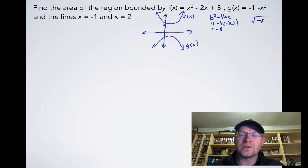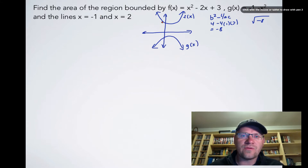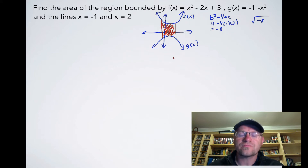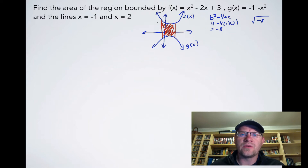For g of x, we have a parabola that opens downward and also doesn't touch the x-axis. From the sketch we can determine that f of x lies above g of x. We're looking for the area between x equals negative one and x equals two — the region trapped between these two curves.